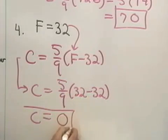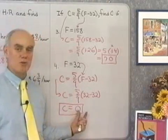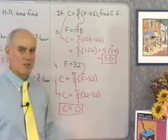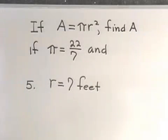So a Fahrenheit temperature of 32 degrees corresponds to a Celsius temperature of 0 degrees, and that's true. Water freezes at 32 degrees Fahrenheit and 0 degrees Celsius. Let's look at a problem that involves the area of a circle. A is equal to πr². Find A if π is 22 7ths and r is equal to 7 feet.